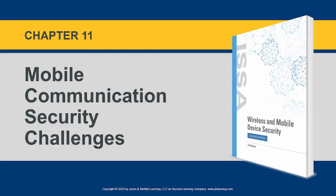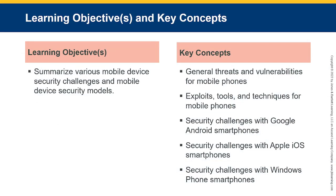Welcome to wireless and identity security class. In chapter 11, we look at some of the security challenges in mobile communication, including techniques, tools, and exploits for mobile phones. We look at Android smartphones, Apple iOS smartphones, and Windows smartphones.